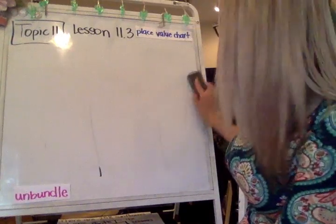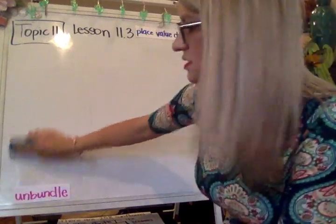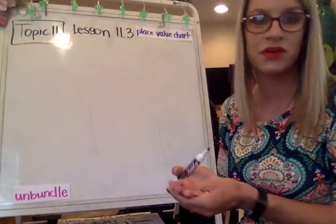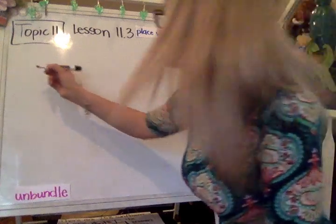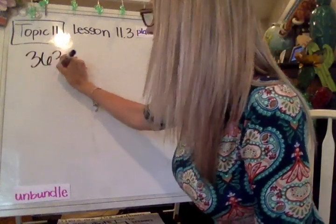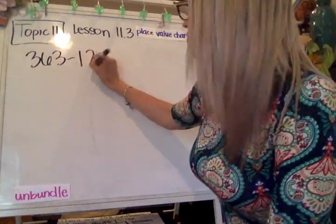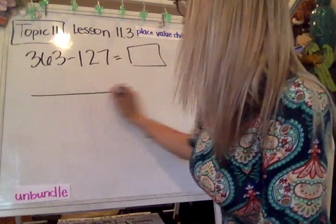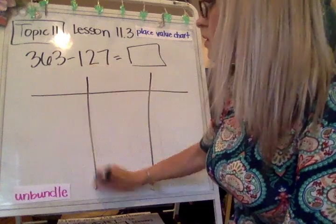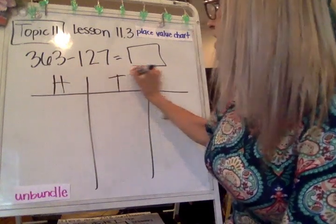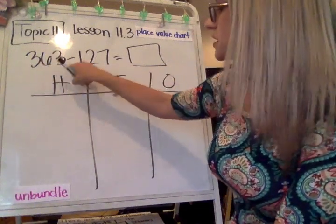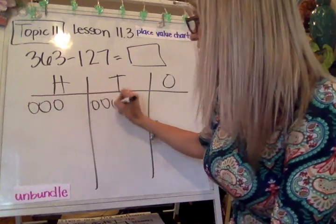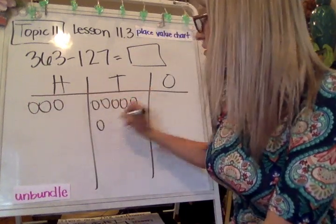Not all of these problems have you unbundle. I want you to see some more when it is doing the unbundling. So it's really important for you to pay attention to these. Let's do one more. 363 minus 127. Our hundreds, our tens, and our ones. 363. So 3 in the hundreds, 6 in my tens, and 3 ones.